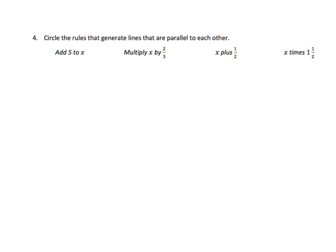So, we need to look for the two rules that involve either multiplying, or, I mean, adding or subtracting. So, we have 1 here, add 5 to X. Yep, that's addition. Multiply X by 2 thirds. Nope, that's multiplication. Multiply X plus 1 half, that's addition once again. And X times 1 and 1 half, again, multiplication. That does not result in parallel lines.